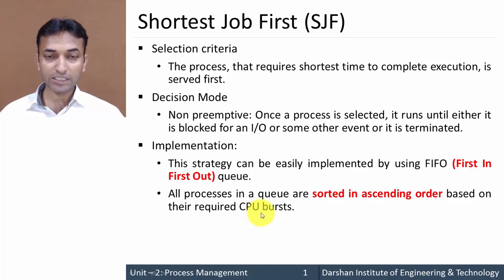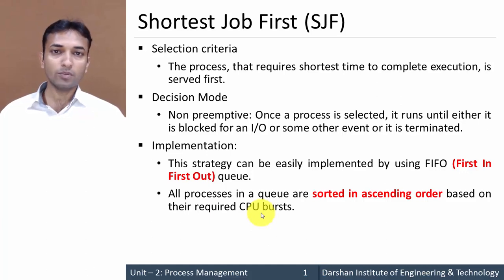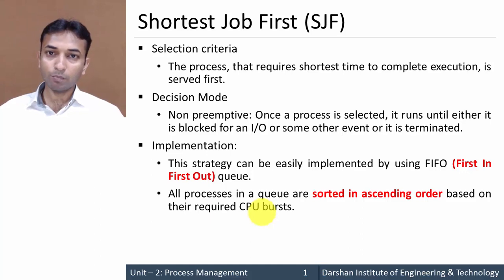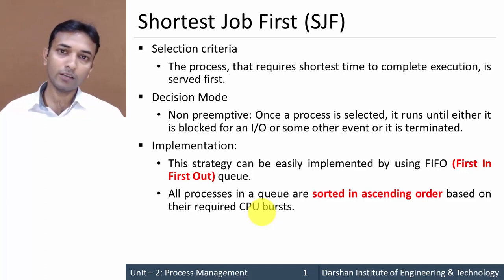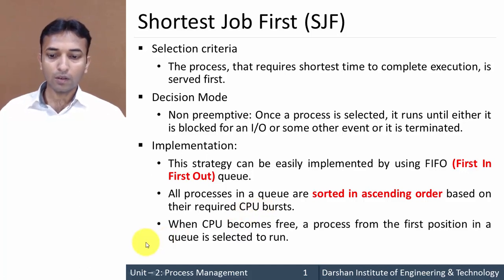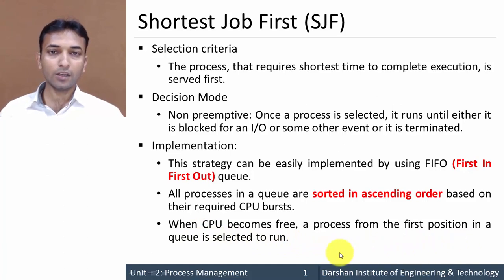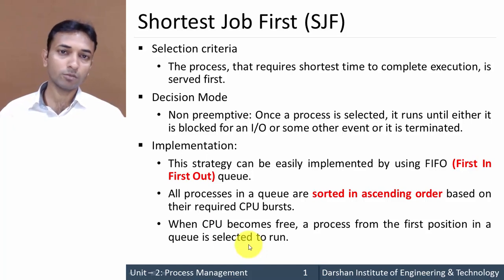Each and every process is sorted based on their CPU burst time. The process towards the head requires minimum time to complete its execution, then the second process requires more than the first, and so on. When the CPU becomes free, a process from the first position in the queue is selected to run — the processor is allocated to the first process once it becomes free.